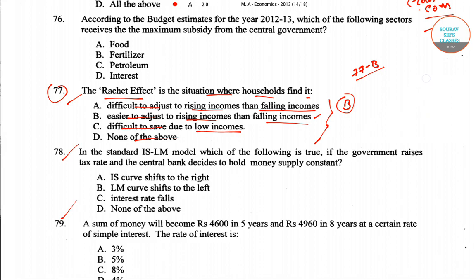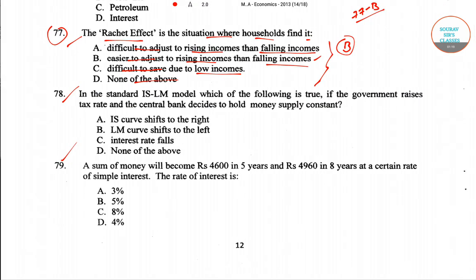Now we will come to the next question, which is question number 78. In question number 78 it is asked: in the standard IS-LM model, which of the following is true if the government raises the tax rate and the central bank decides to hold money supply constant?